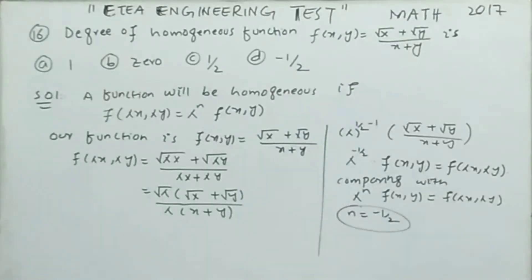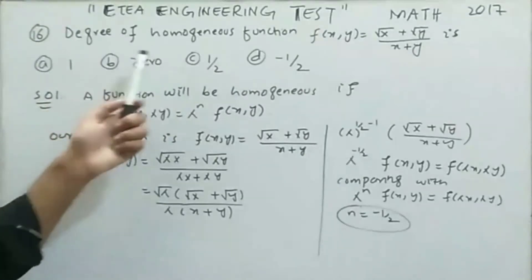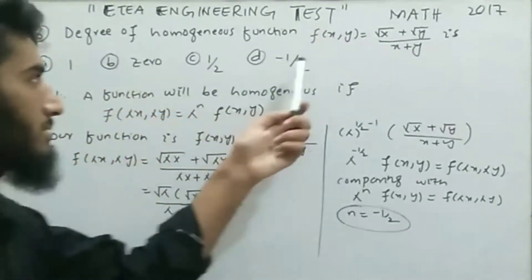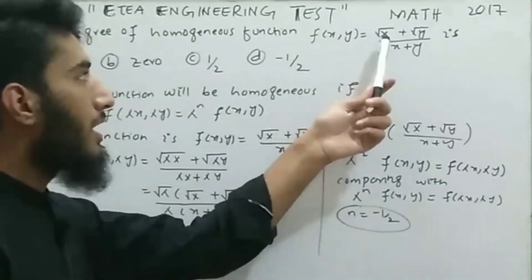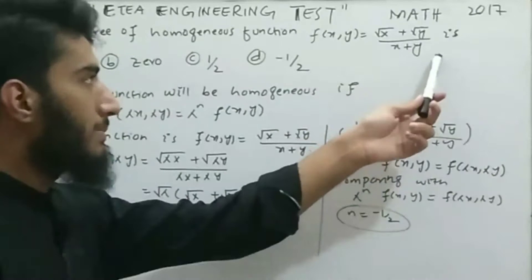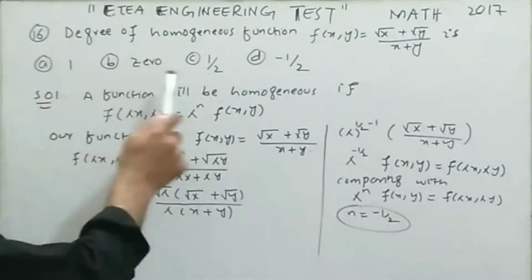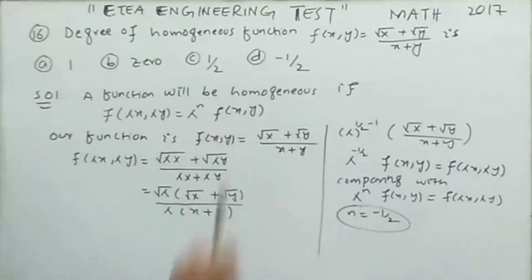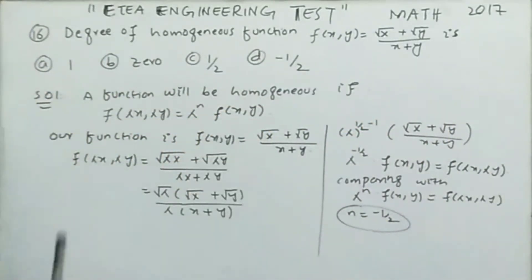Moving to MCQ number 16: find the degree of the homogeneous function f(x, y) = (√x + √y) / (x + y). Four options are given: 1, 0, 1/2, and −1/2.